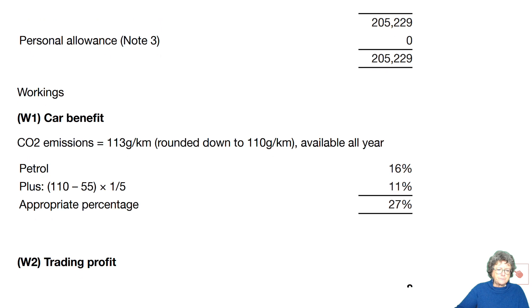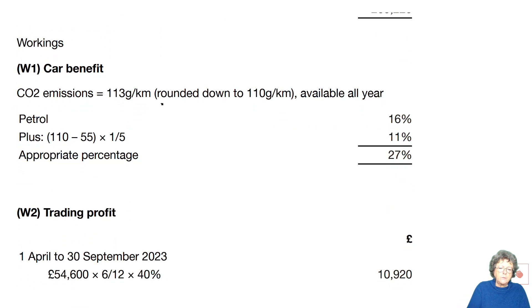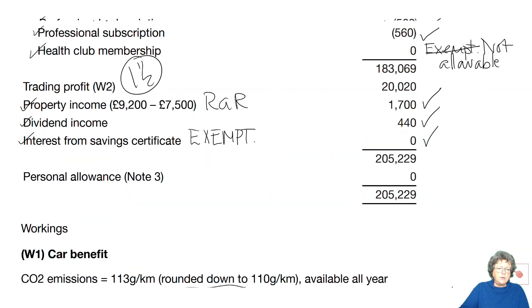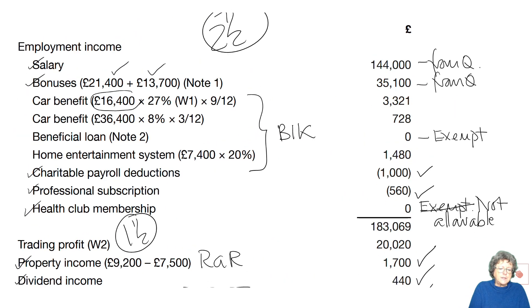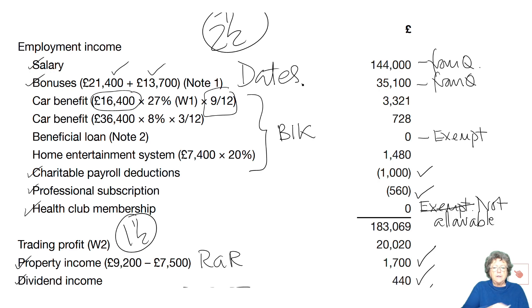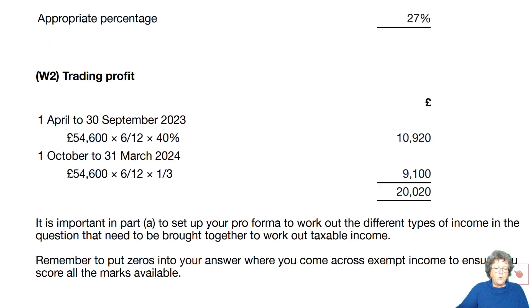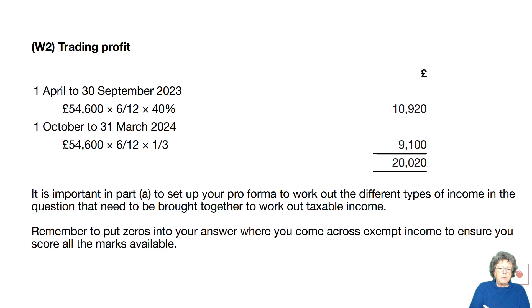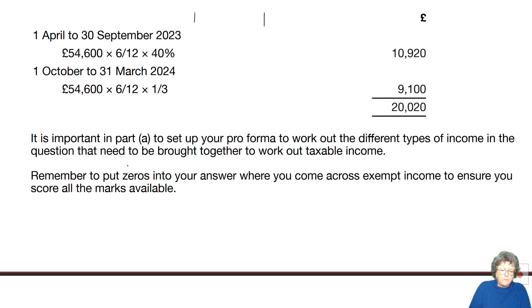For the car benefit in the notes: we round down the CO2, then minus 55 divided by 5 gives us 11%, plus the basic 16% is 27%, which is then used against the list price with a time apportionment — don't forget dates, that's very important. When working out a benefit like this, go back to the question and make sure you've read it carefully to check whether you're doing it for the whole year or part of a year. The trading income shows the partnership ratio split calculation. Remember to put in the zeros — you'll also get marks for those.